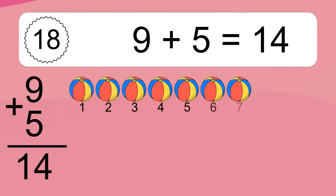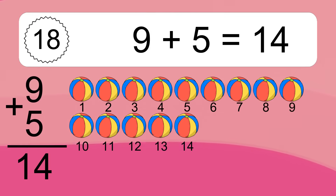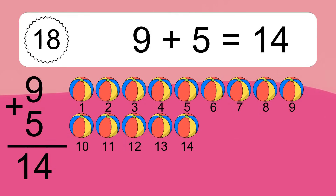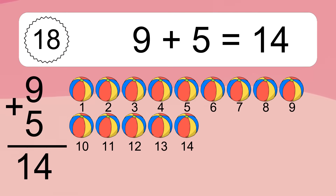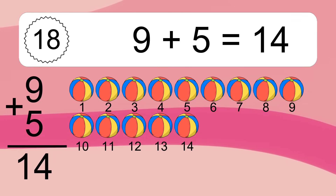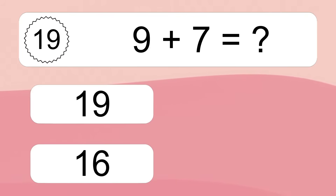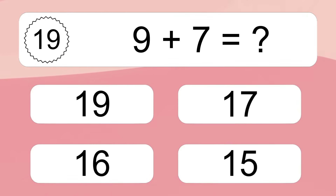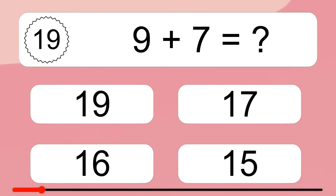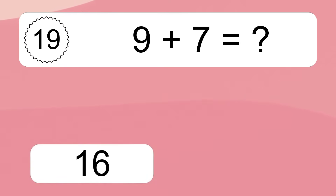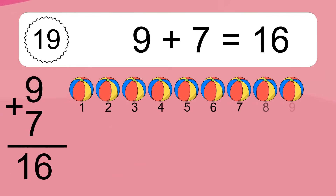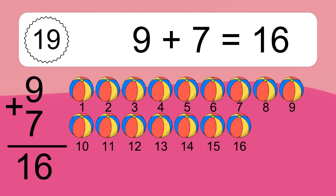9 plus 5 equals 14. Let's count it. 1, 2, 3, 4, 5, 6, 7, 8, 9, 10, 11, 12, 13, 14. 9 plus 7 equals what? 9 plus 7 equals 16. Let's count it. 1, 2, 3, 4, 5.